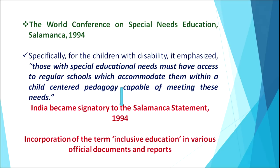Going back to the Salamanca statement, which brought inclusion as a norm, it also said specifically for children with disability that those with special educational needs must have access to regular schools which accommodate them within a child-centered pedagogy capable of meeting these needs. This is precisely what we discussed — the school has to change and bring a child-centered pedagogy where the disabled child also feels included. The impact in the Indian scenario was that India became a signatory to the Salamanca statement in 1994, and we could see the incorporation of the term inclusive education in various official documents and reports in India.